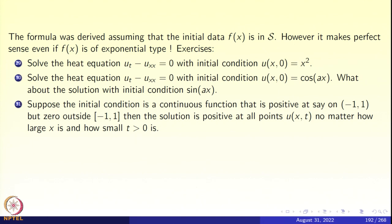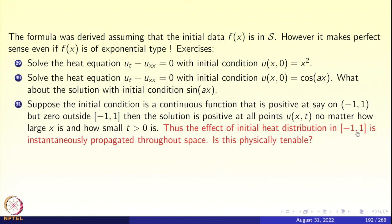So if the initial heat distribution is localized on [−1,1], the solution u(x,t) is positive at all points x,t, no matter how large x is and how small t is. Even with x being 10 kilometers away and t being a few nanoseconds, u(x,t) will be positive. As soon as time becomes positive, the effect of the heat distribution is felt everywhere in space.